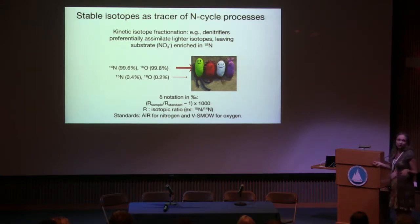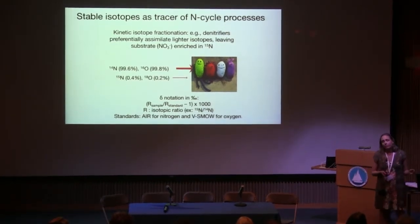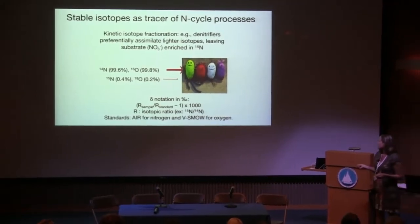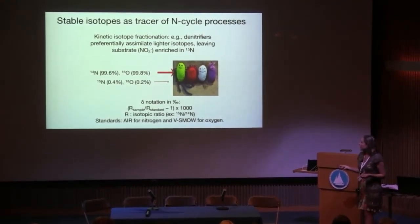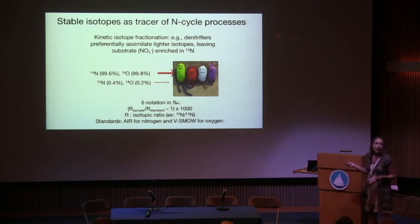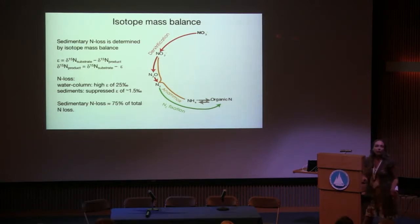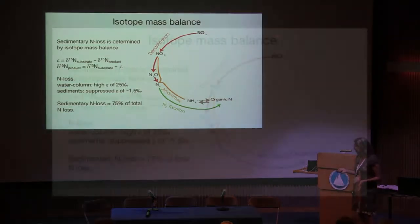One way to better estimate the proportion of benthic nitrogen loss over total nitrogen loss is using stable isotopes. For those not familiar: we use stable isotopes to study biological processes because during biological reactions organisms preferentially use the lighter isotope, enriching the substrate in the heavier isotope. We use the delta notation, which compares the ratio of 15N to 14N of a sample to that of a standard, multiplied by a thousand, because those deviations are rather small.